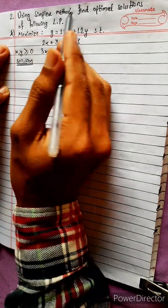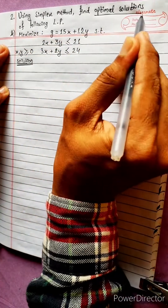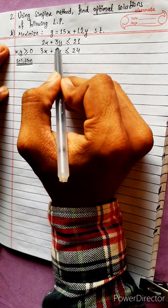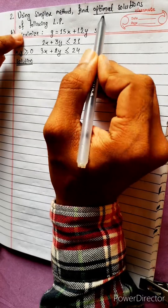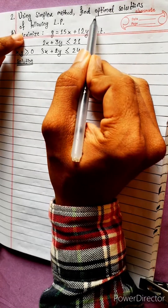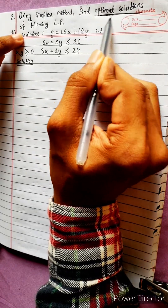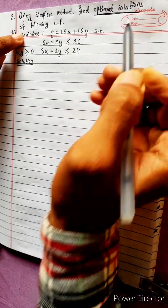Once again, same question. Using the simplex measure, find the optimal solution for the following linear problems. The optimal solution has the third element positive, and there is an optimal solution.